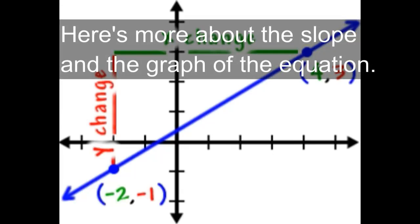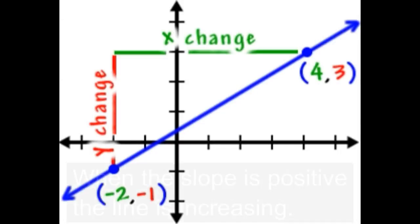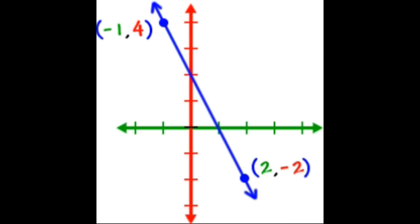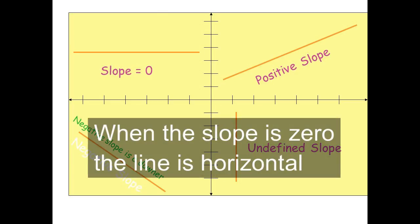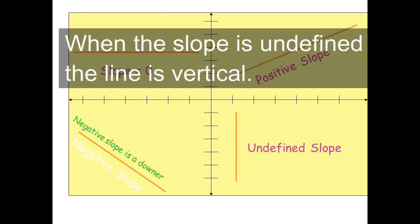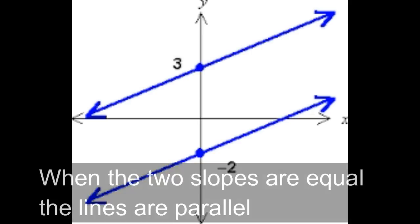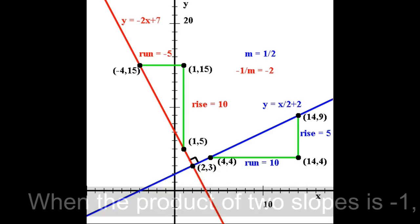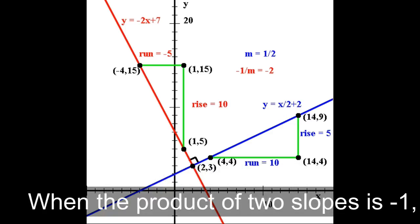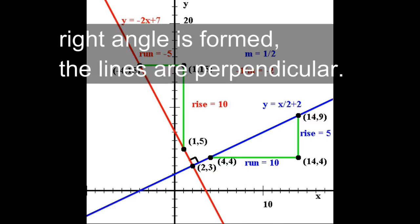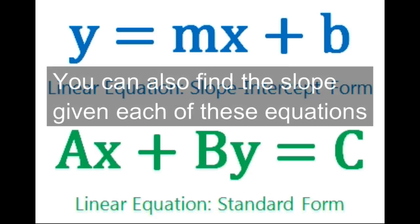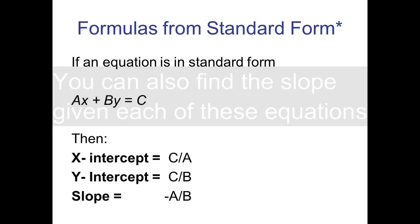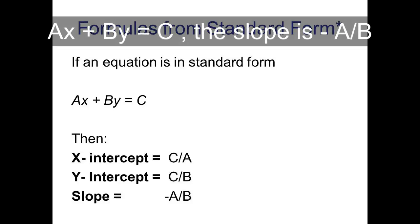Here's more about the slope and the type of the equation. When the slope is positive, the line is increasing. When the slope is negative, the line is decreasing. When the slope is zero, the line is horizontal. When the slope is undefined, the line is vertical. When the two slopes are equal, the lines are parallel. When the product of two slopes is negative one, a right angle is formed.